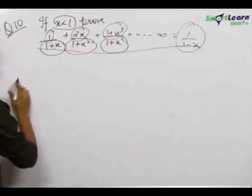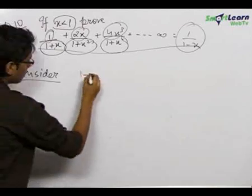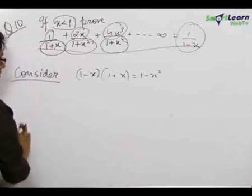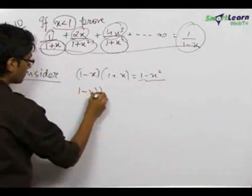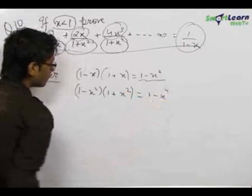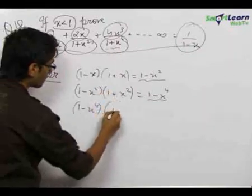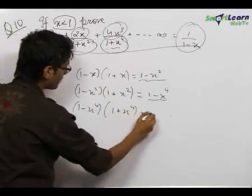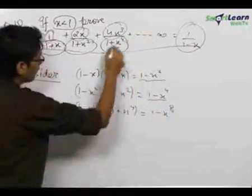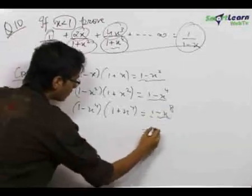The trick is to consider the following: (1-x)(1+x) = 1-x². Now, (1-x²)(1+x²) = 1-x⁴. And (1-x⁴) multiplied by the next term gives 1-x⁸. We can confidently say that the next term in the denominator will be 1+x⁸, which when multiplied by 1-x⁸ gives 1-x¹⁶.